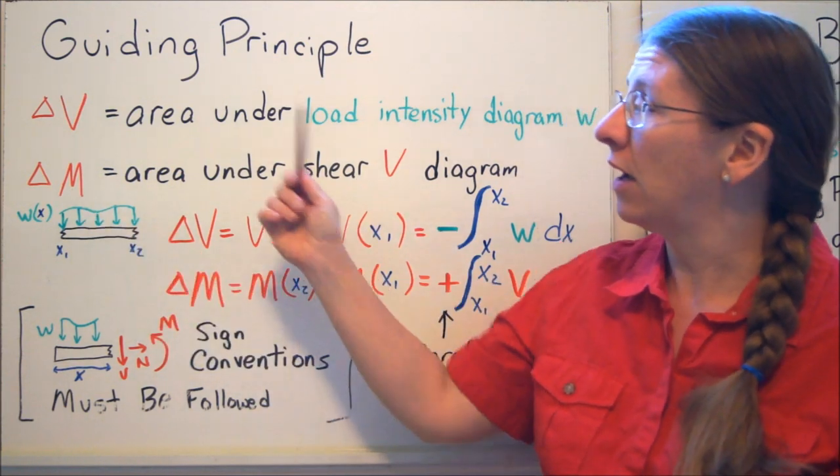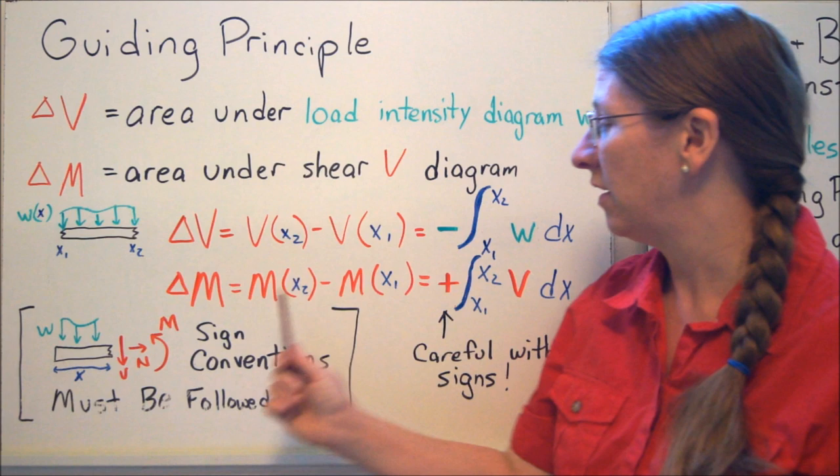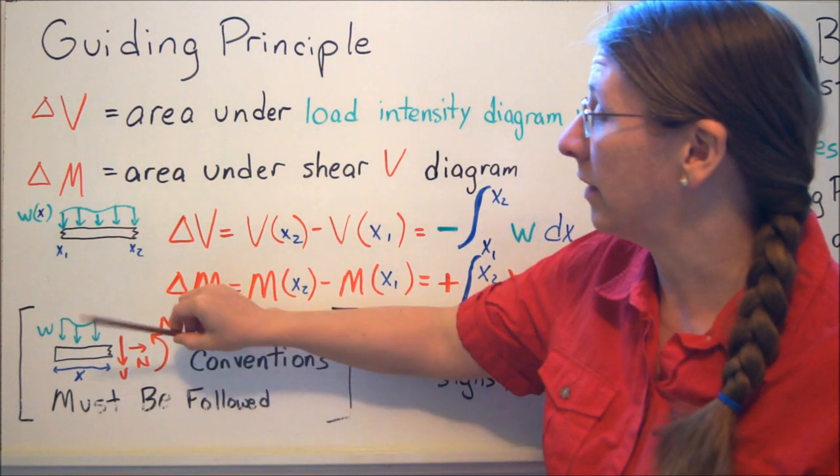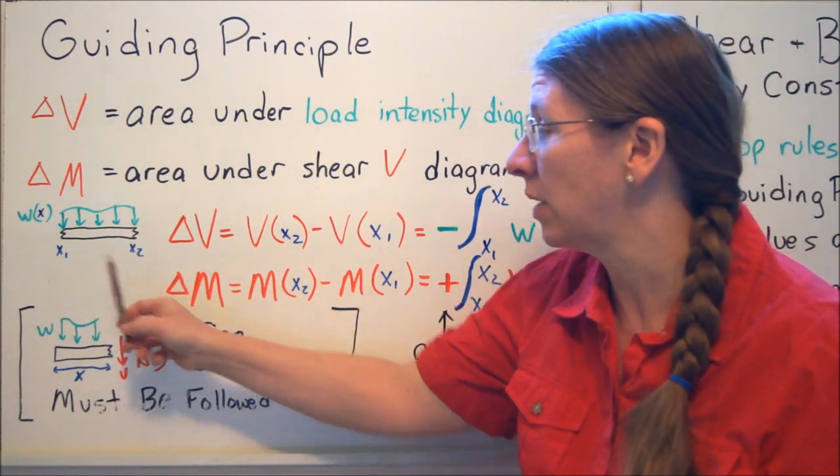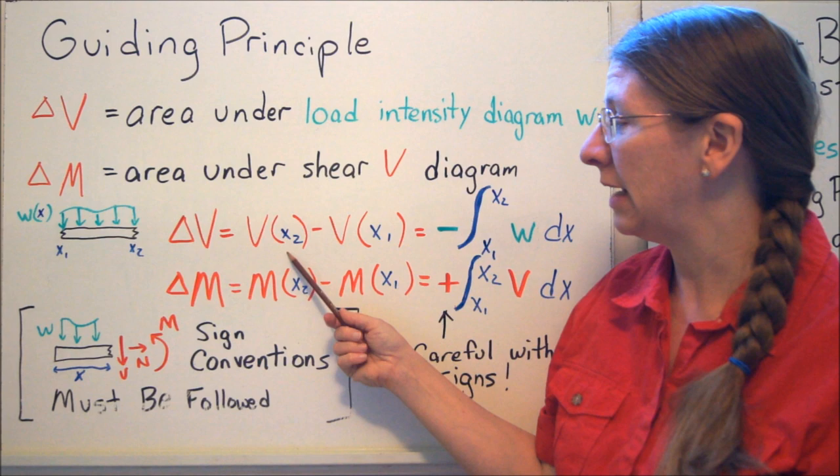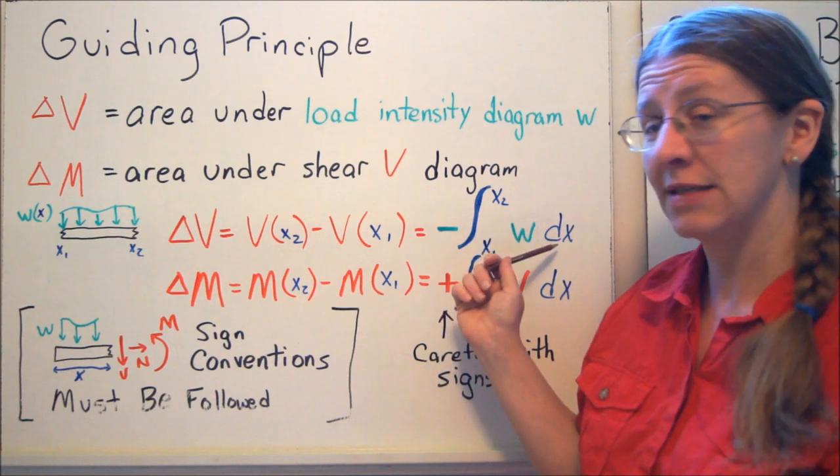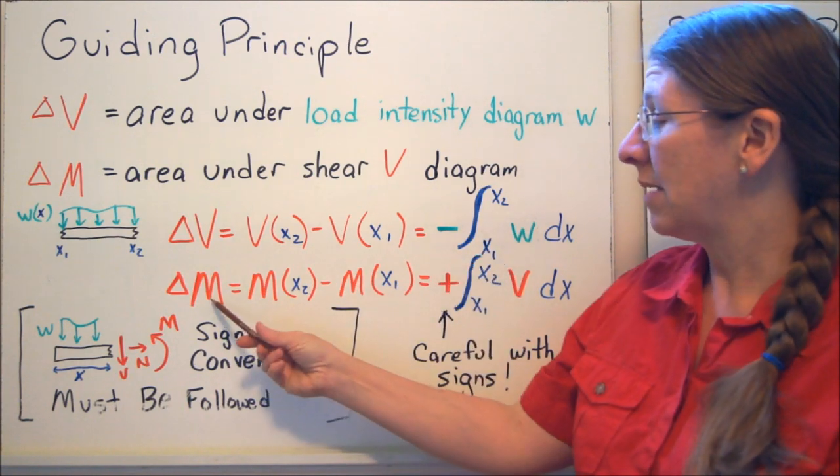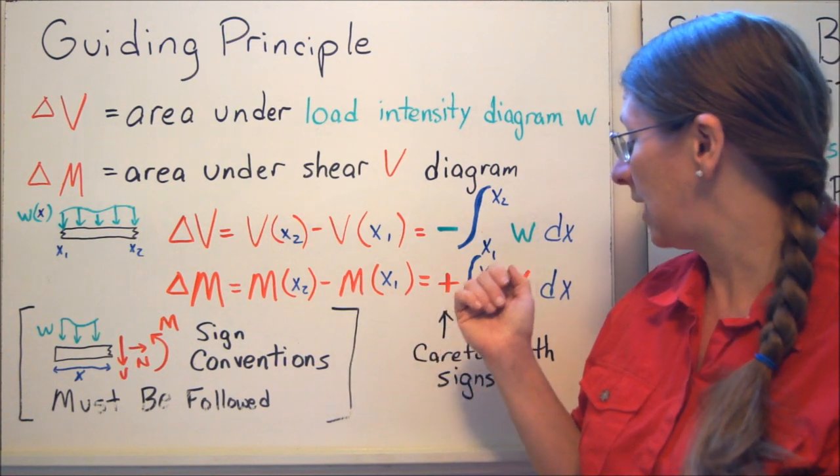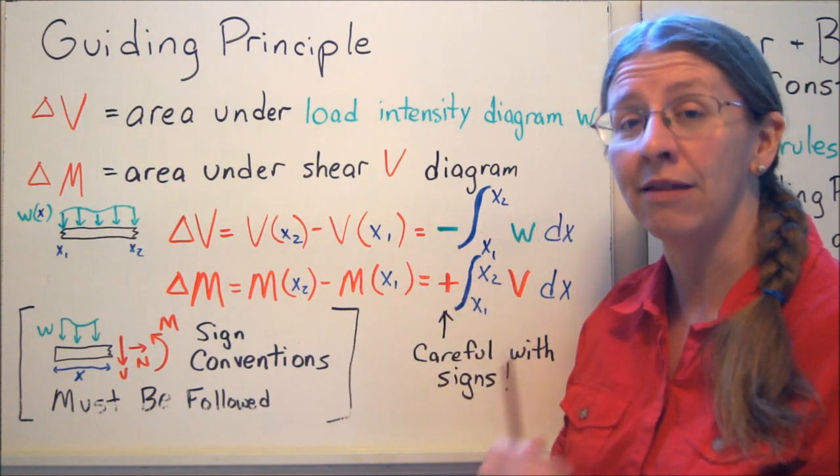The change in M is the area under the shear diagram. Specifically, if we look at these integrals, the change in V is the integral of negative W and the change in M is the integral of V. If we put a little bit more detail around it, if we take a piece of our beam between X1 and X2 with some distributed load on it, the change in V is the new value minus whatever I started at, and the integral under there. That's the area under the load intensity diagram. The same thing here, change in M is M of X2 minus M of X1 equals the integral from X1 to X2 of V.